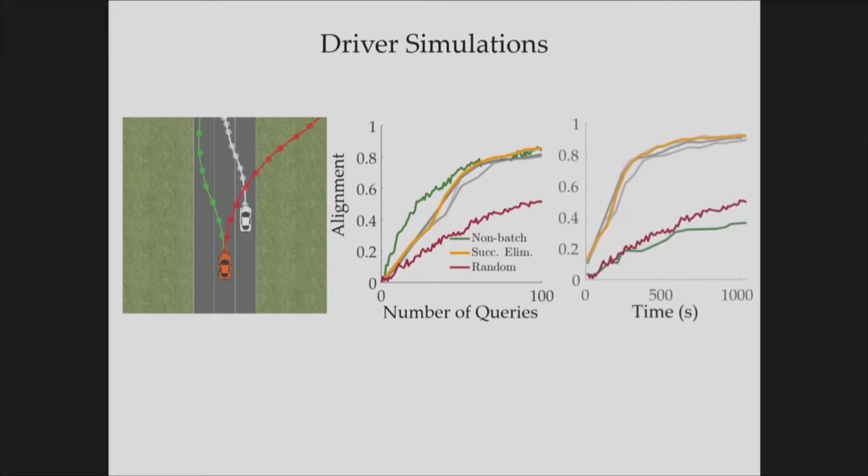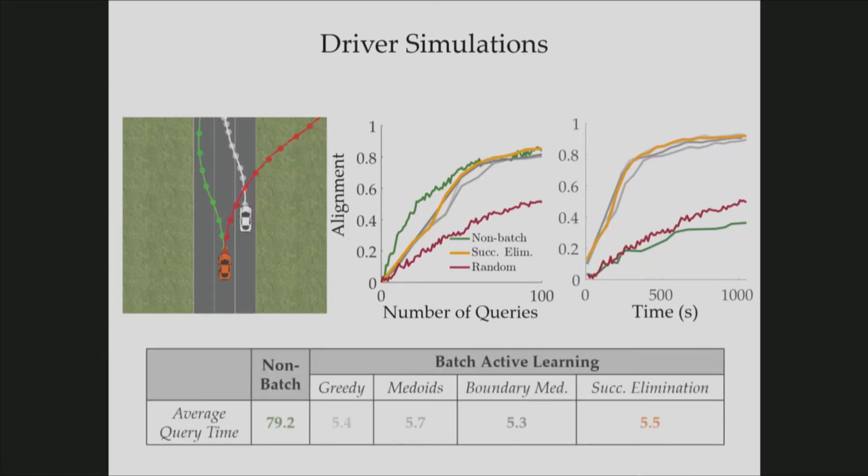But when we plot the alignment with respect to time, we have seen that non-batch active method is performing poorly because it needs too much time to generate queries. In fact, you can see from this table that batch mode active learning methods reduce query generation time significantly.